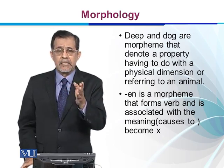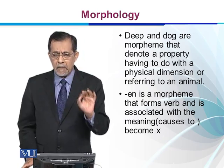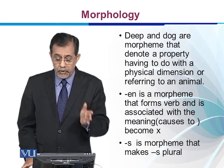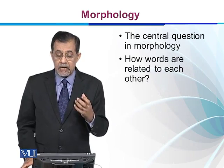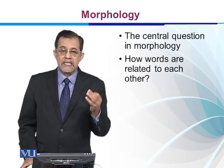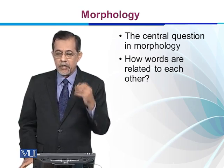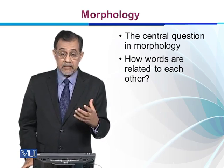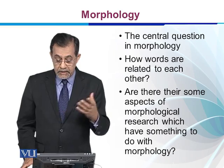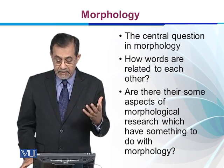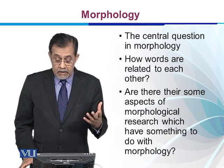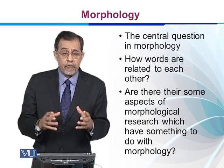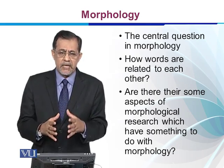In deep and deepen, X is the main morpheme and -en is attached to it. Similarly, -s is attached to dog to make it plural. The central question in Morphology is how words are related to each other. Deep is a simple word, but when -en is added it becomes a complex word. Dog is a simple word, but when -s is added it becomes more complex. In Morphology we ask and answer certain questions and explore dimensions which help us in understanding Morphology.